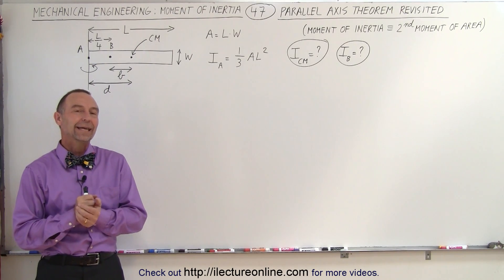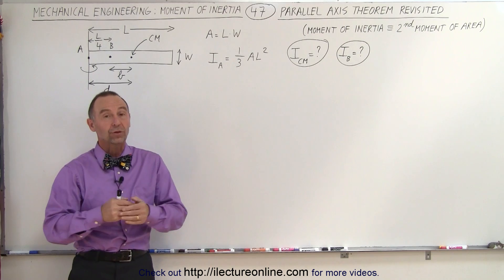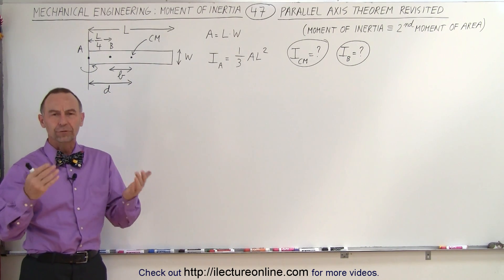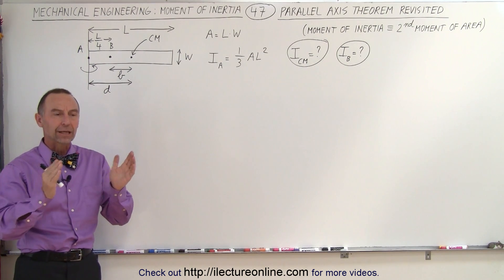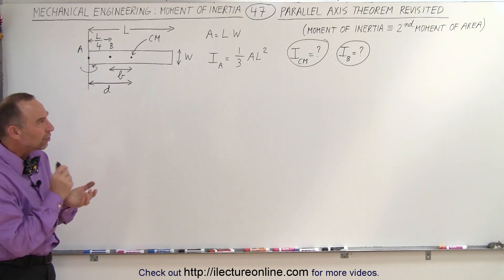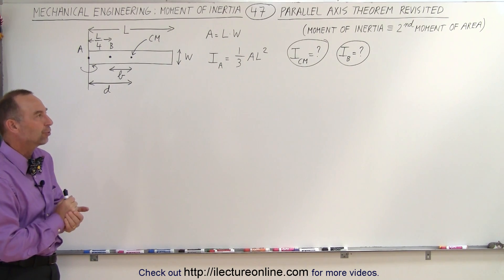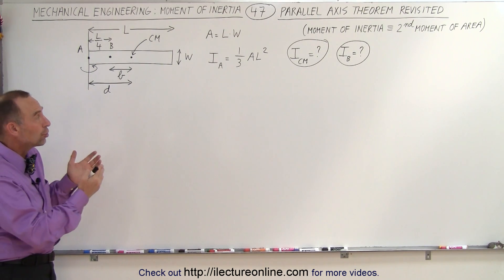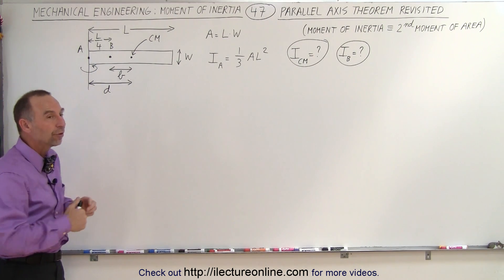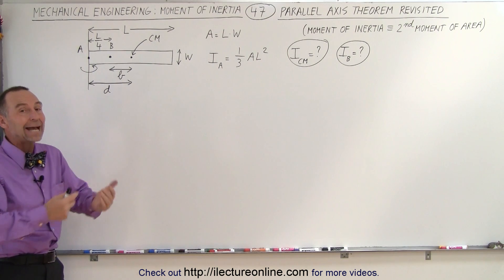Welcome to our lecture online. In order to be able to find the moment of inertia, or the second moment of area, of an irregular surface or an irregular area that we can subdivide into different areas, we need to understand the use of the parallel axis theorem a little bit better. We're going to revisit it to show how we can find certain moments of inertia relative to the center of mass or relative to any axis.